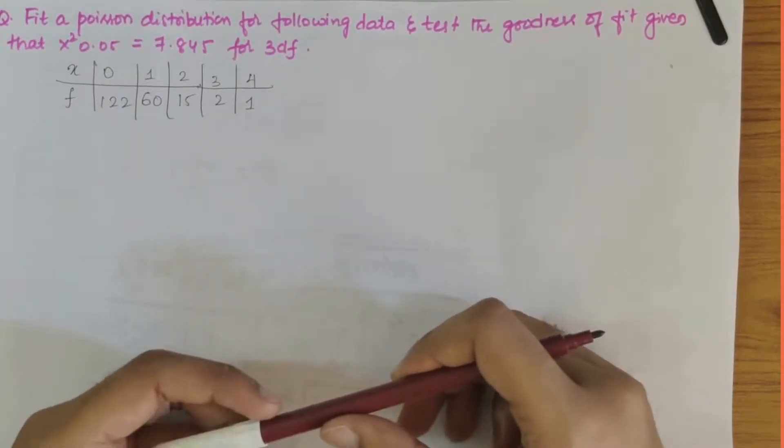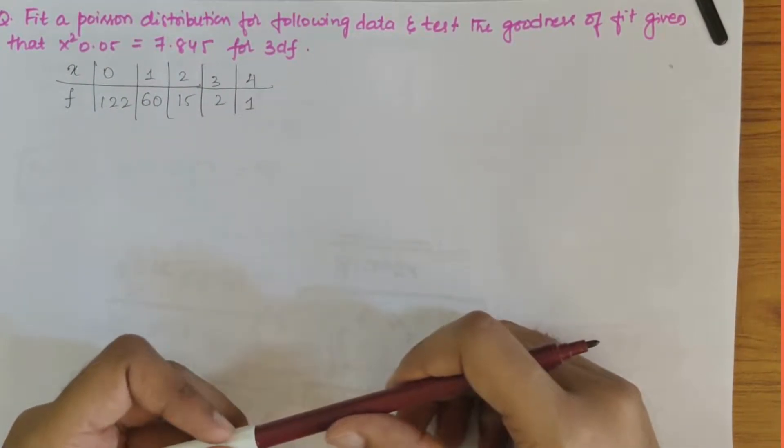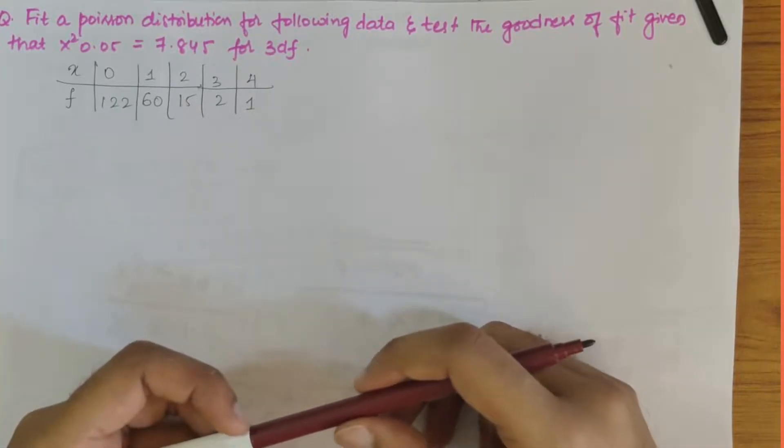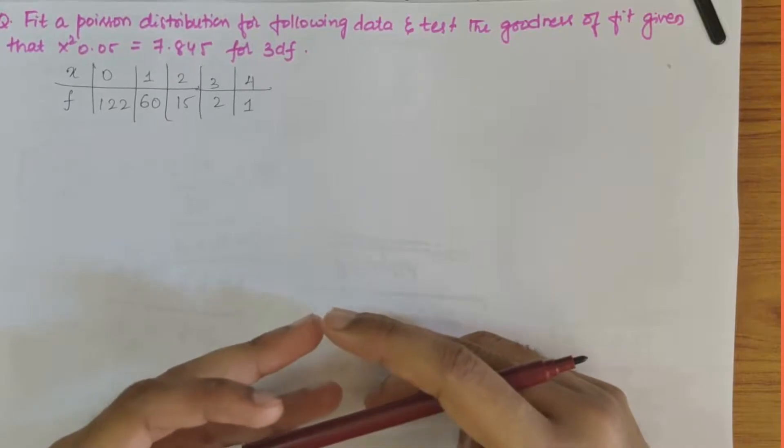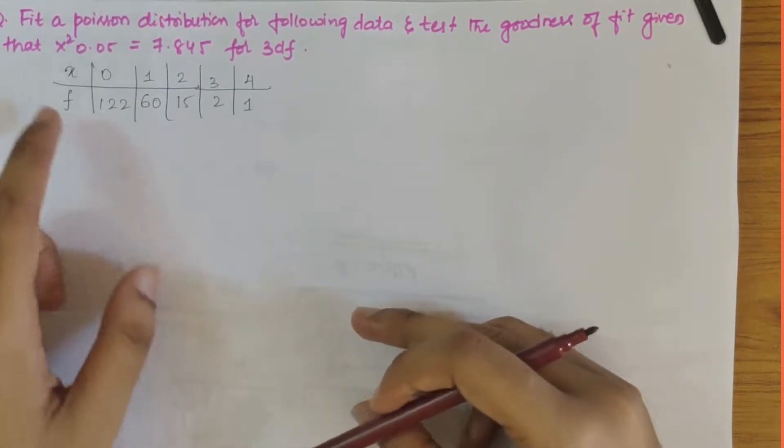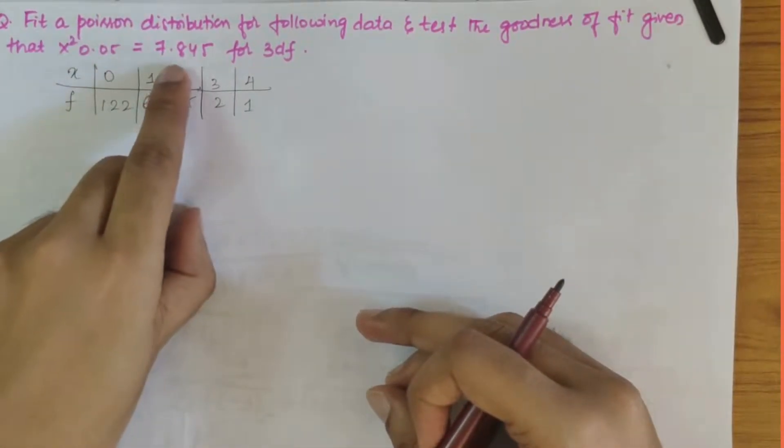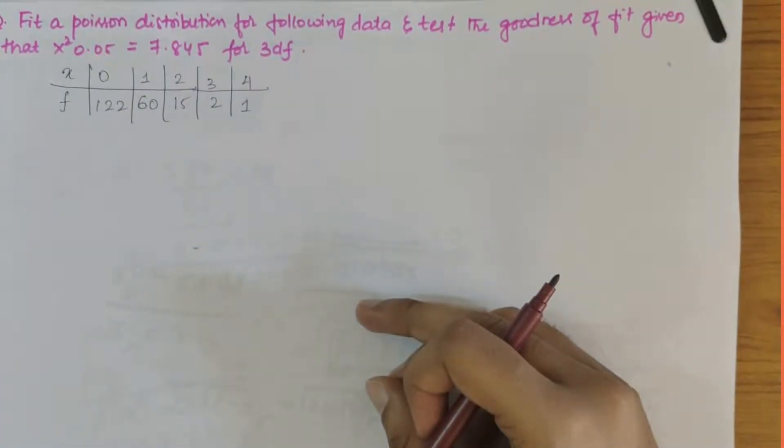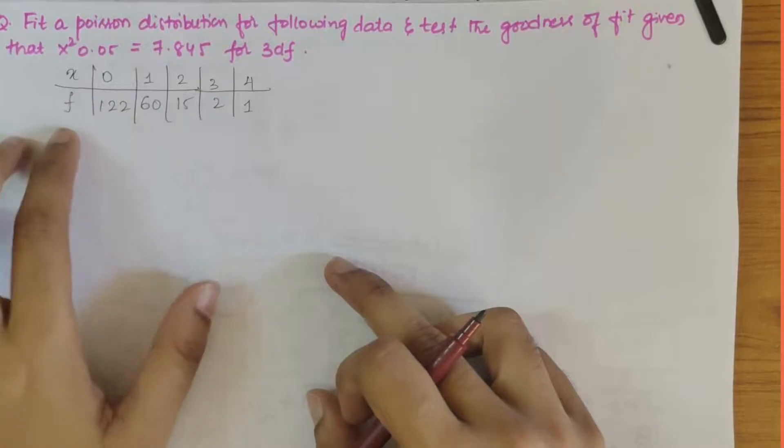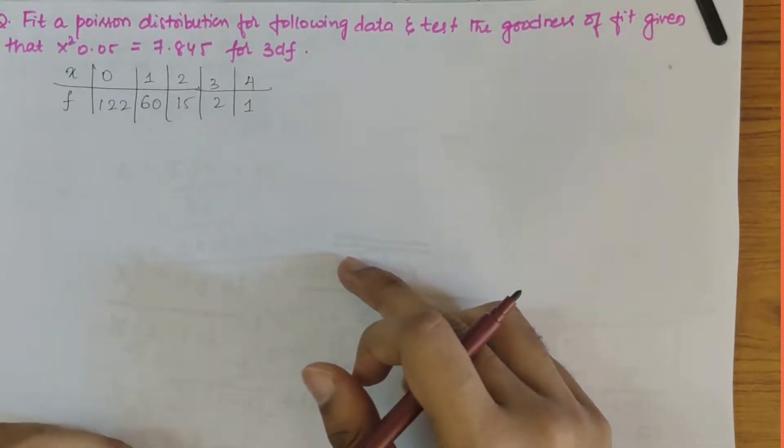In this video we'll be solving a question related to chi-square distribution. The problem statement says that we have to fit a Poisson distribution for the following data and test the goodness of fit, given that chi-square 0.05 is equal to 7.815 for 3 degrees of freedom. The x values and f values are given.